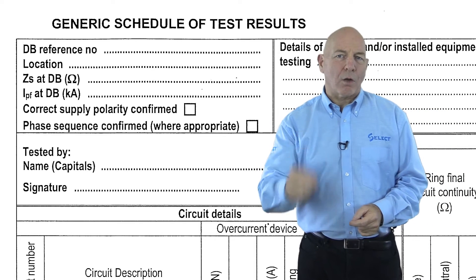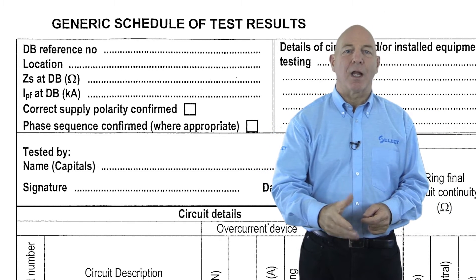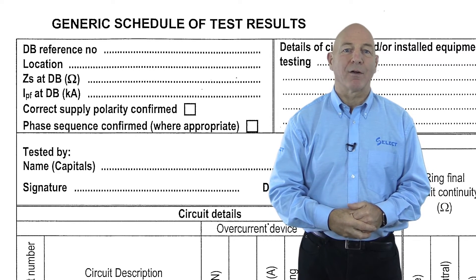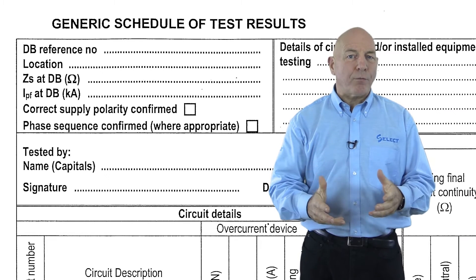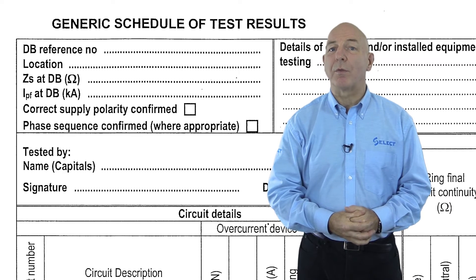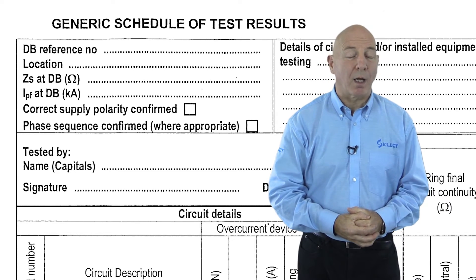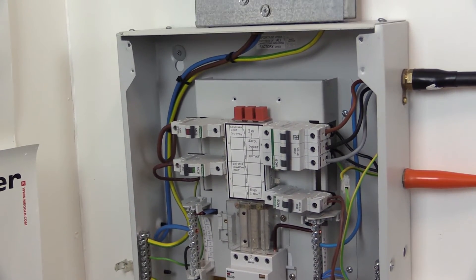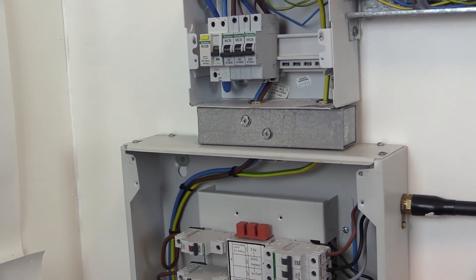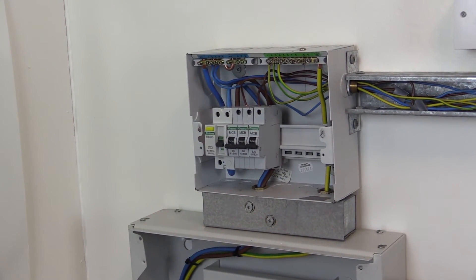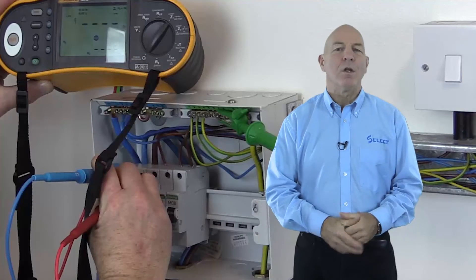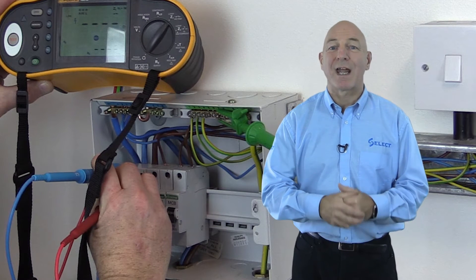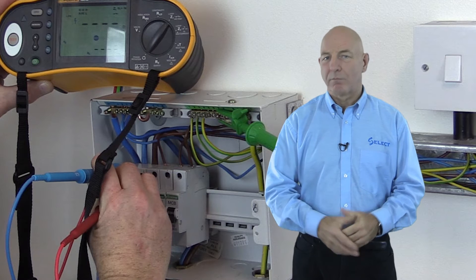To obtain the earth fault loop impedance external to the installation at the actual incoming supply to the building may require an additional test to be carried out at this position, but can often be obtained simply by inquiry with the building owner or the supply distributor. On small installations such as a dwelling, the situation is different, as the incoming supply to the building is normally located close to the main distribution board or consumer unit, so an earth fault loop impedance test carried out here can be regarded as the earth fault loop impedance external to the incoming supply, ZE.